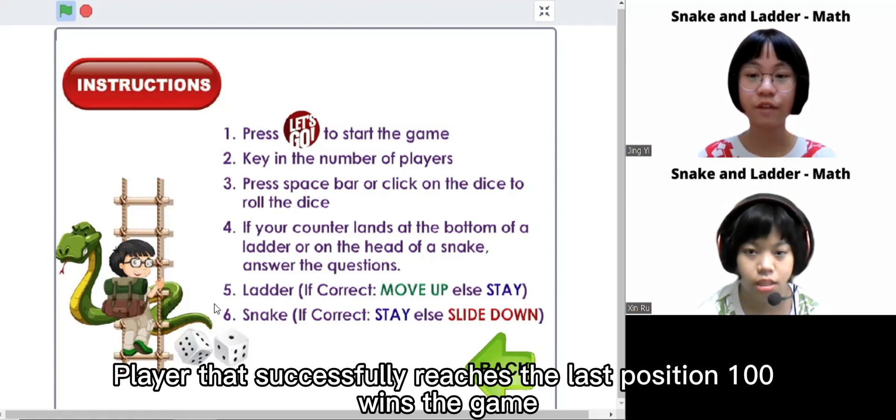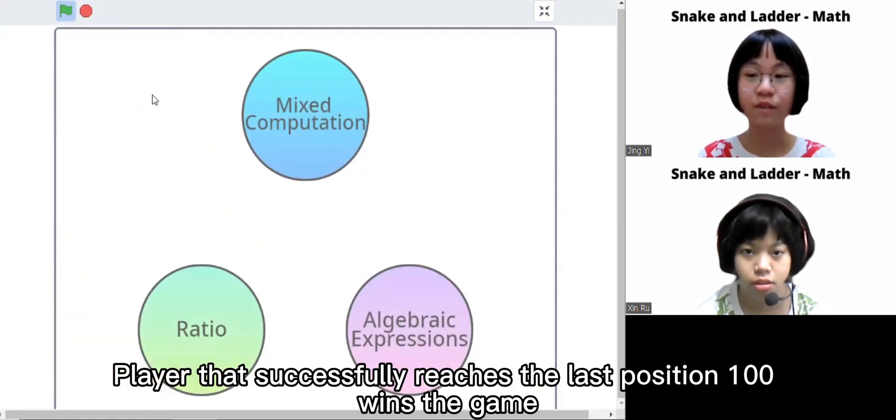Player that successfully reached the last position, 100, wins the game.